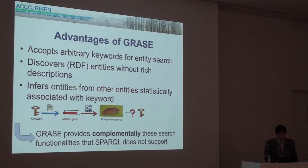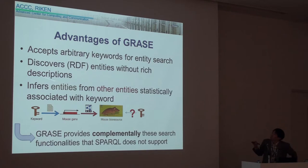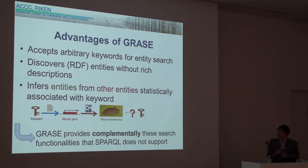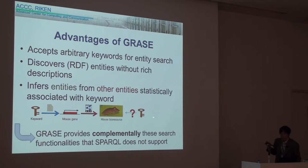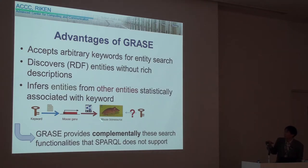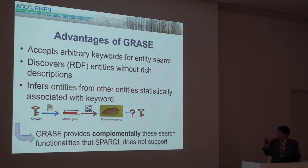This is a summary of the advantages of GRACE. GRACE accepts arbitrary keywords for entity search since full-text search is performed for statistical search. GRACE discovers RDF entities without rich description by way of both statistical search over documents and semantic search. GRACE infers entities from other entities statistically associated with keywords, even if the result entity may not be directly associated with the keyword. GRACE provides complementary search functionalities that SPARQL does not support.